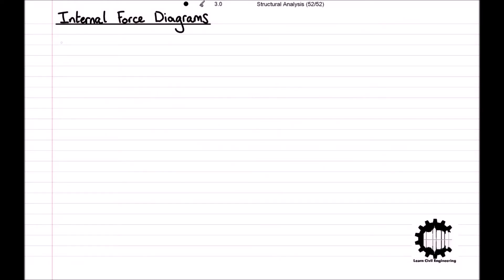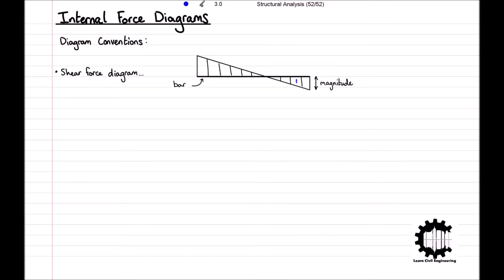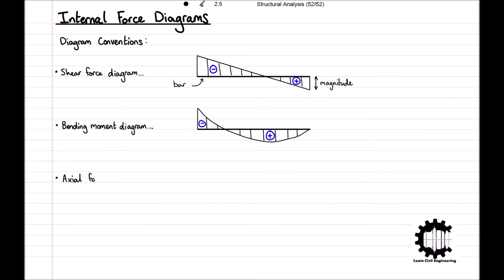When drawing internal force diagrams, it is important to use the correct convention. For structural analysis, the shear force diagram is represented upside down: a positive shear is represented below the bar and a negative shear above. Likewise for the bending moment diagram: a positive bending moment is below the bar and a negative bending moment is above. The axial force diagram is the opposite: a positive axial force is above the bar and a negative axial force is below.